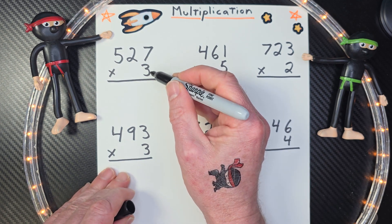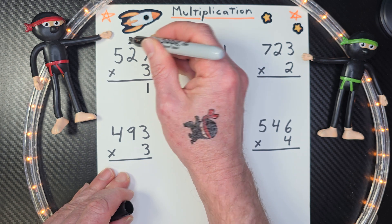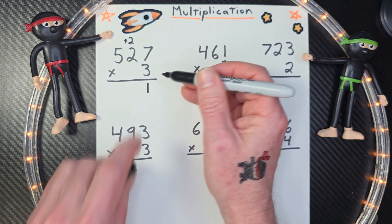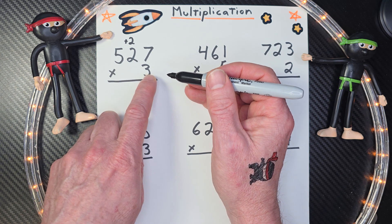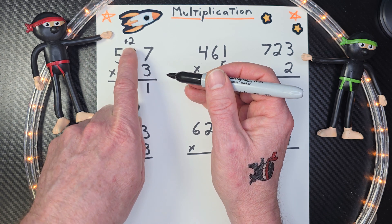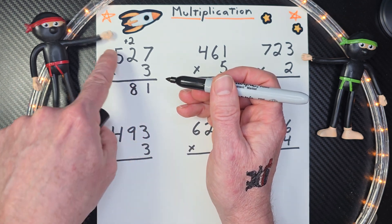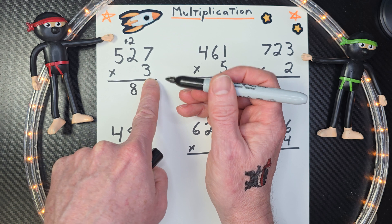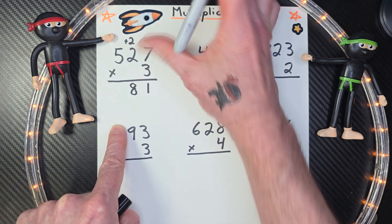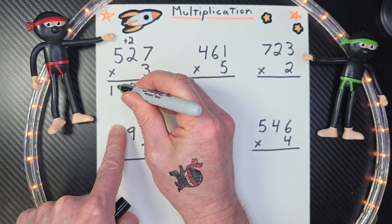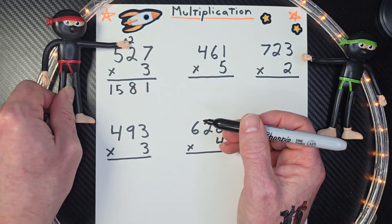So 7 times 3 is 21. So I put the 1 right here and the 2 up here. I'm going to add that 2. And then my next step is multiplying 3 times 2. So 3 times 2 is 6, plus the 2 is 8. Don't be late, ninjas. I don't have another number to add up here. So I just simply go 3 times 5. So 3 times 5 is 15. Did you get that? I did. Awesome math ninja.